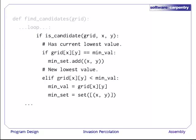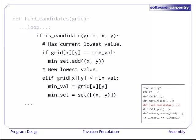If the cell at x-y is a candidate, then we check to see whether it ties with the current lowest value or is a new lowest value. If it ties with the lowest value, we add its coordinates to the set. If it's a new lowest value, then we reinitialize min_val and min_set, as discussed in an earlier episode. As you can see, the find_candidates function fits right above fill_grid in our file.